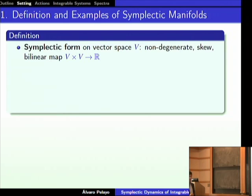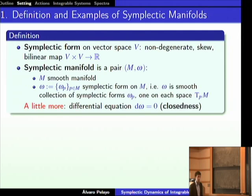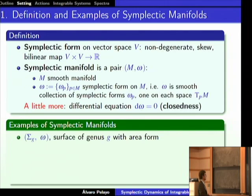A symplectic form on a vector space is a non-degenerate anti-symmetric bilinear form. A symplectic manifold is a smooth manifold on each tangent space of which you have a symplectic form — and because it's a smooth manifold, you want the collection of symplectic forms to vary smoothly. You also want the form to be closed. In dimension 2, a symplectic form is the same as an area form, so the first example is a surface of genus g with any area form — for example, the torus or the sphere.